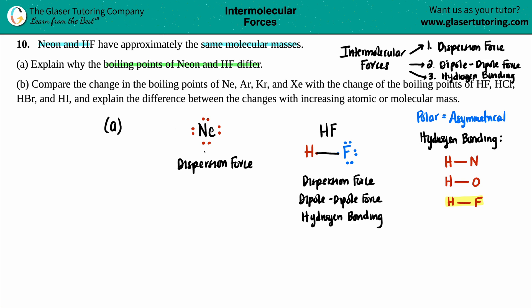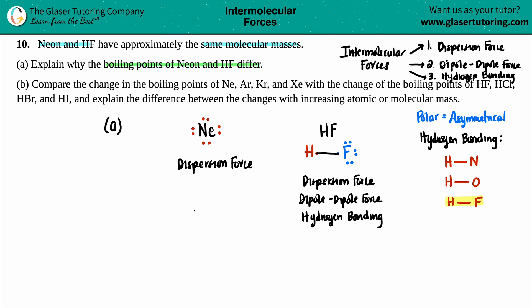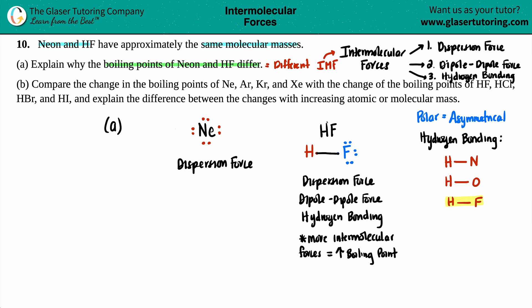Neon has only one intermolecular force — dispersion. This is why their boiling points are very different. The more intermolecular forces a substance has, the higher its boiling point. Since HF has all three, it has a much higher boiling point. For part A: neon and HF have different boiling points because they have different intermolecular forces (IMFs), even though they have the same molecular masses.